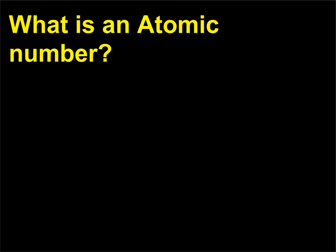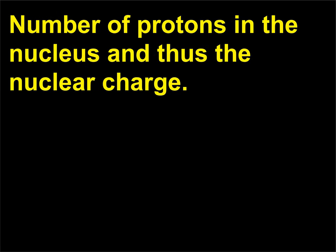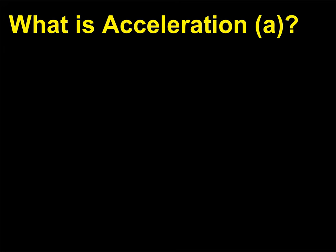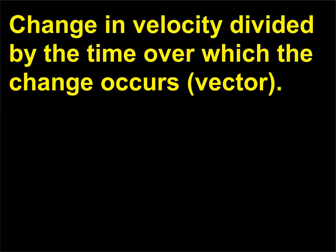What is an atomic number? It is the number of protons in the nucleus and thus the nuclear charge. What is acceleration (A)? It is the change in velocity divided by the time over which the change occurs — a vector quantity.